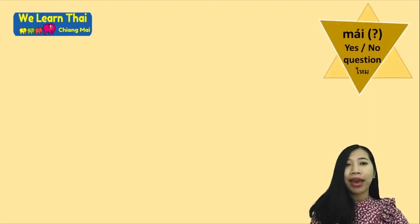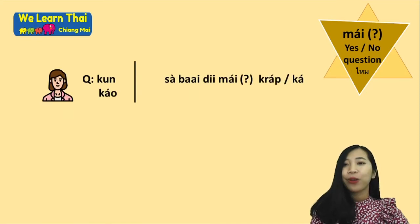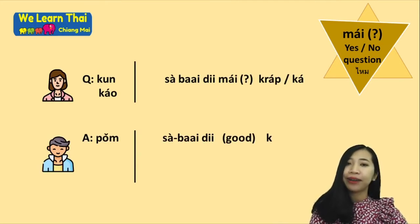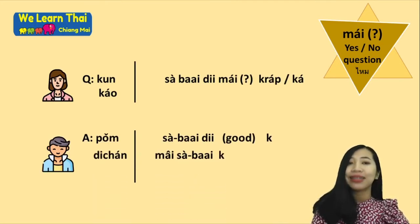The word 'mai' is used for yes/no questions. For example: 'Khun sabai dii mai kha?' — Are you well? 'Di chan sabai dii kha.' — I am well. Or: 'Di chan mai sabai dii kha.' — I am not well.